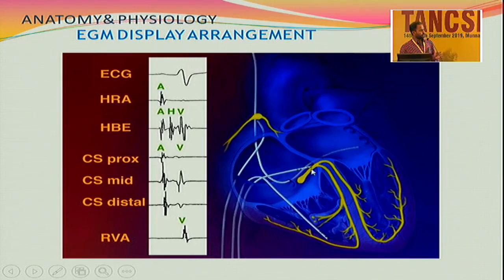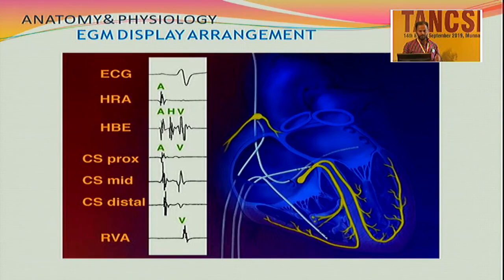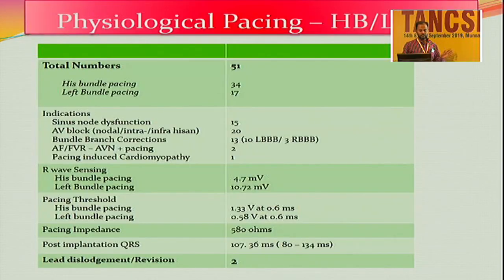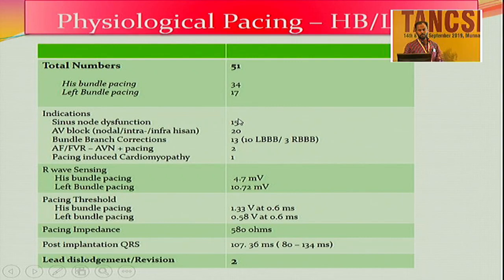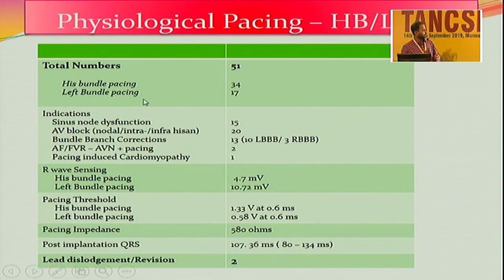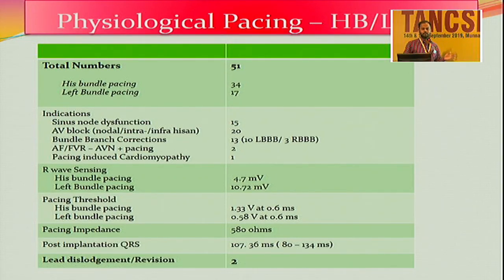I place a His bundle catheter in the His bundle region from the groin and one more RV backup catheter to pace the ventricle in case of paroxysmal AV block. Our experience: I have done close to 51 cases of physiological pacing — 34 were His bundle and 17 were left bundle. The indications were: 15 sinus node dysfunction, 20 AV blocks including nodal, intra-, and infra-Hisian blocks, and bundle branch block correction therapy.